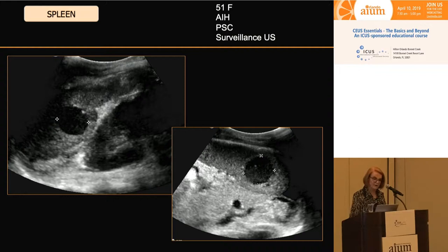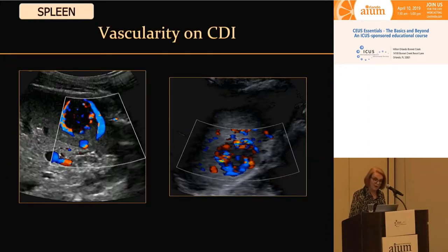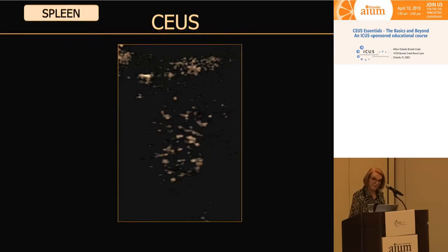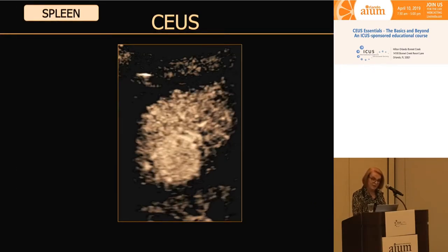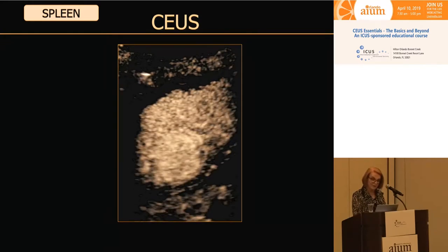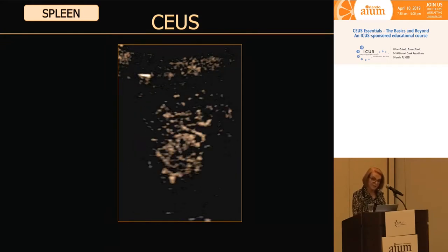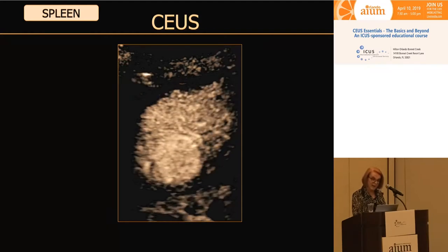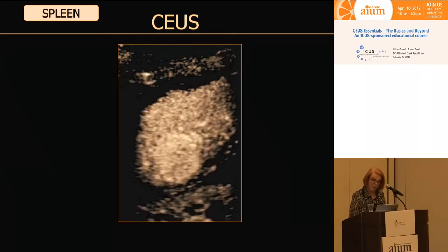Let's look at another patient with autoimmune hepatitis and PSC — a 51-year-old female on surveillance scan. In this very normal-sized spleen, there's a mass that looks quite similar to the previous one: a hypoechoic mass. I really have no idea what this is. With color Doppler, there's both perilesional and intralesional vascularity. On contrast, it kind of fills from the periphery into the center — hyper-enhancing relative to the parenchyma, with homogeneous enhancement.